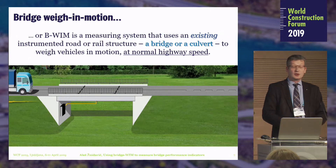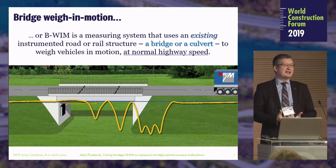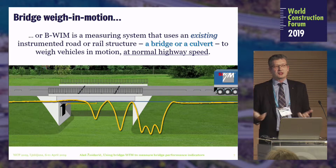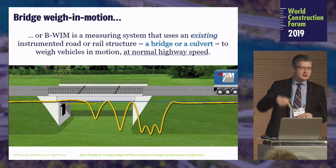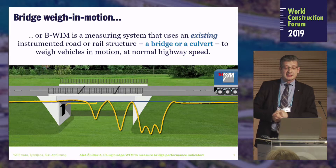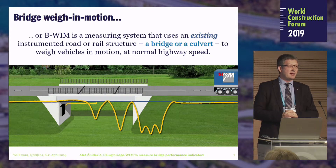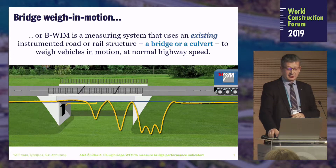So what is Bridge Weigh-in-Motion? If we want to know the traffic loading, we have to weigh the traffic. You probably all know traffic counters, but they are useless because they only give you numbers of trucks — they don't give you any information about the traffic loading itself, about axle loads and axle spacings, which are needed to convert loads into load effects. So Bridge Weigh-in-Motion, or BWIM, is a measuring system that uses an existing instrumented road or rail structure — a bridge or a shorter culvert — to weigh vehicles in motion at normal highway speed, giving information about the weight and axle loads of every vehicle that crosses the measuring point.